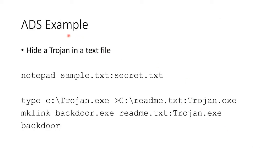Here's an example. You could hide a Trojan in a text file. I use Notepad and say: notepad sample.txt:secret.txt. This creates a text file called sample.txt — that's the main file — and an alternate stream called secret.txt. When you do a DIR or search in Windows Explorer, you will not see secret.txt; you will only see sample.txt. Sample.txt has just whatever text, while secret.txt is the text you want to hide.